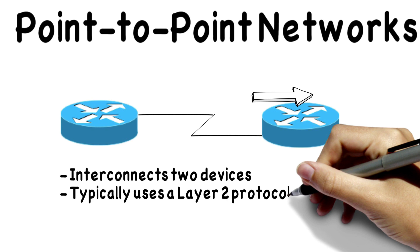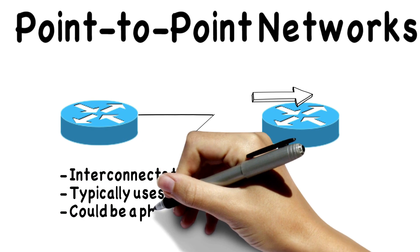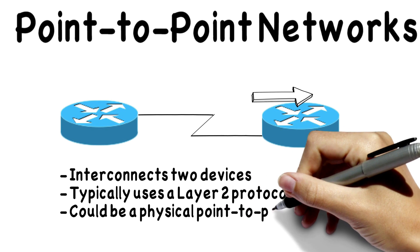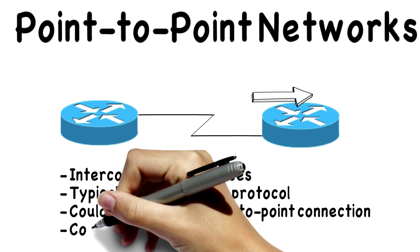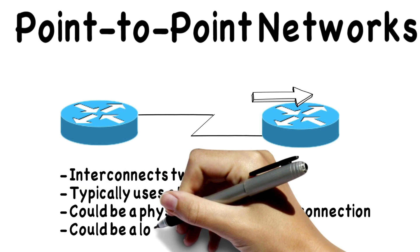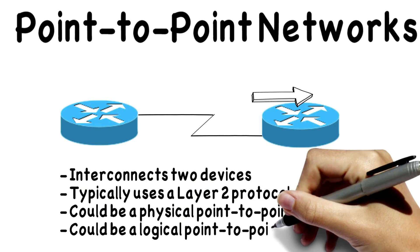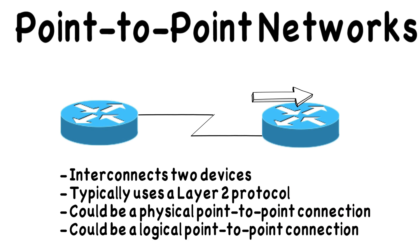Please understand that even though we talk about a point-to-point network being this connection between two sites, and we typically picture it as a physical connection, it could be a logical connection. I could connect to a remote office going through the internet and set up something like a virtual private network — a VPN connection. So logically, this looks like a point-to-point network.